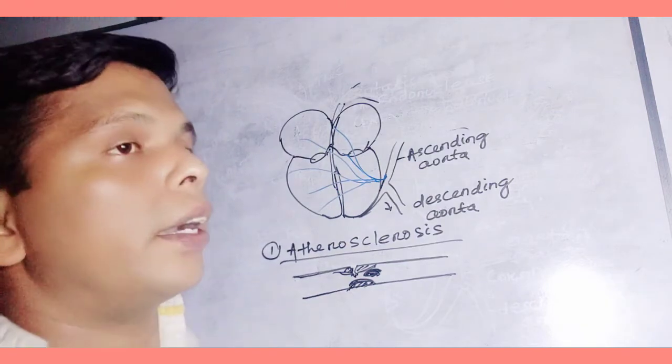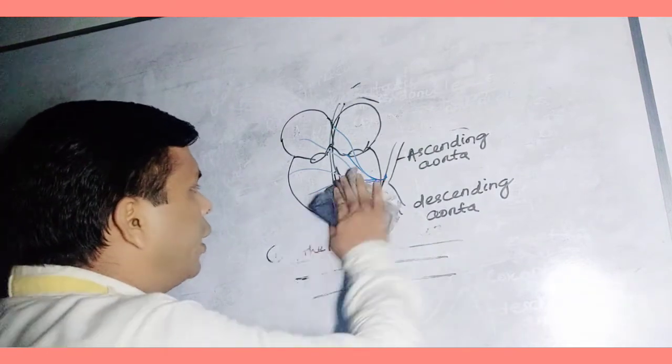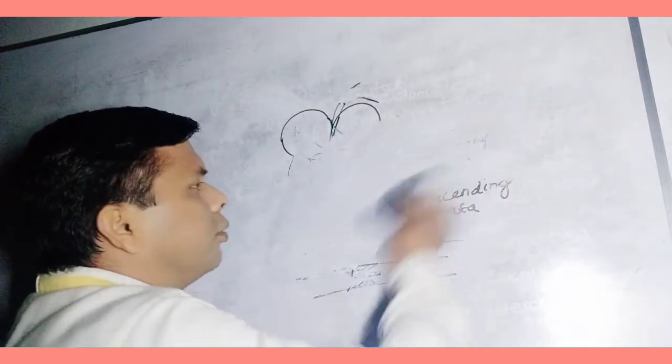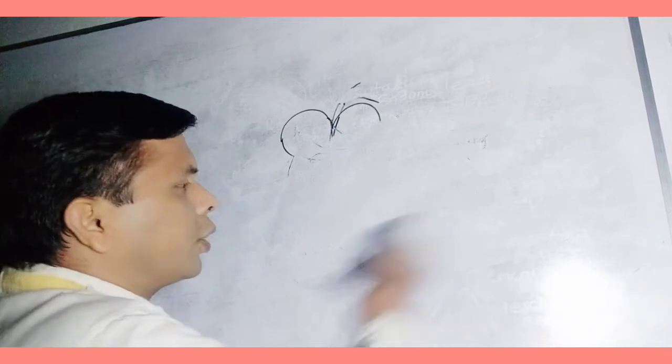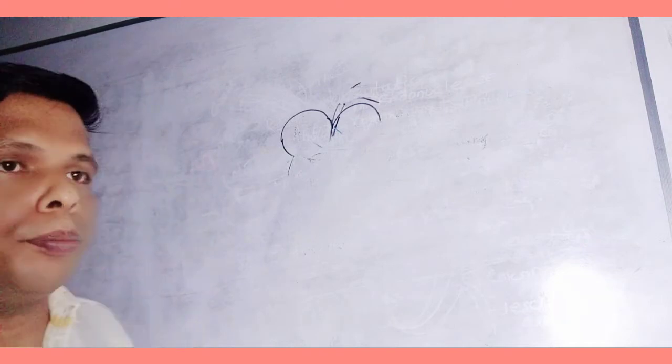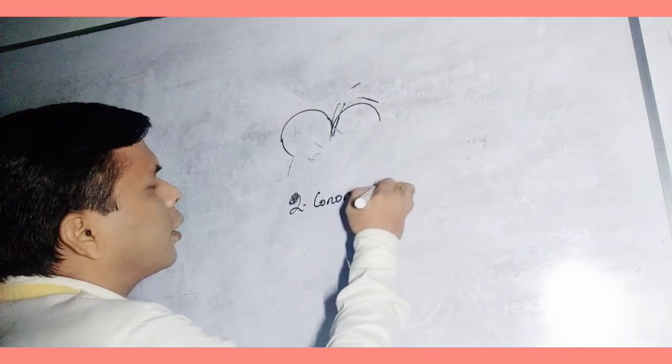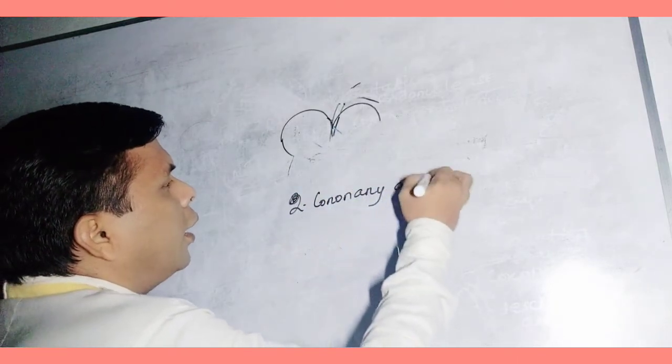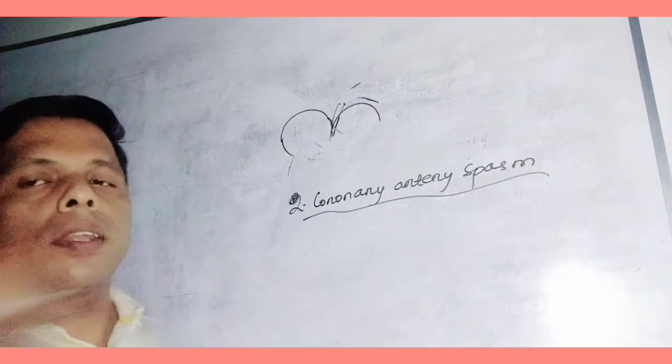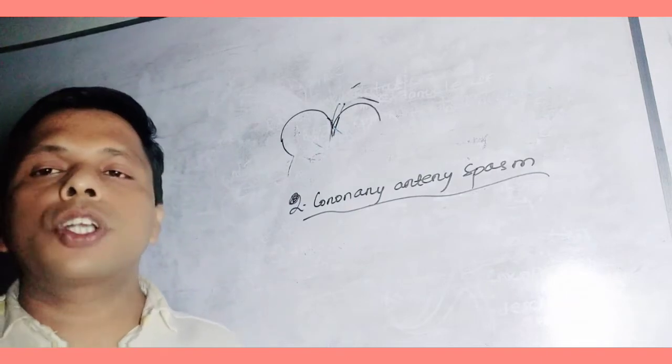What is the secondary cause? Another cause is the spasm or unusual contraction, which is called coronary artery spasm. The second cause is coronary artery spasm. It is a less common cause. The coronary artery contracts.